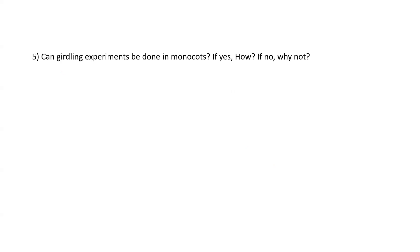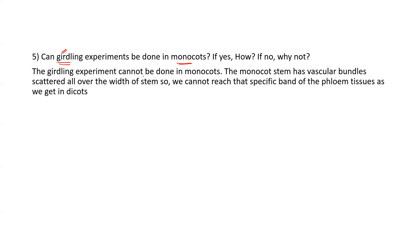Fourth question: can we do the girdling experiment in monocots? Girdling means removing all the tissue outside the vascular cambium — removing the bark. The answer is no, you cannot do this in monocots. The reason is that monocot stems have scattered vascular bundles, so you cannot isolate a specific band up to the phloem tissue the way you can achieve in dicots.